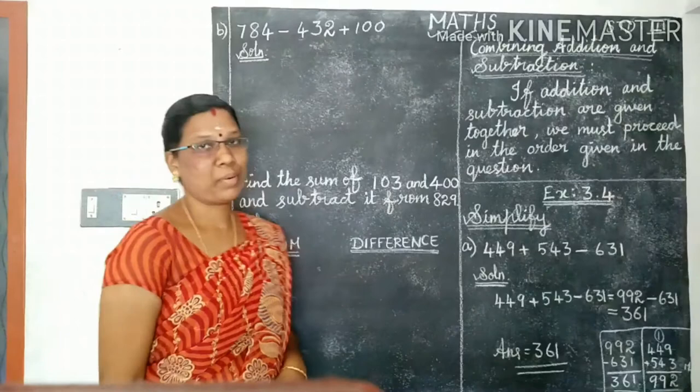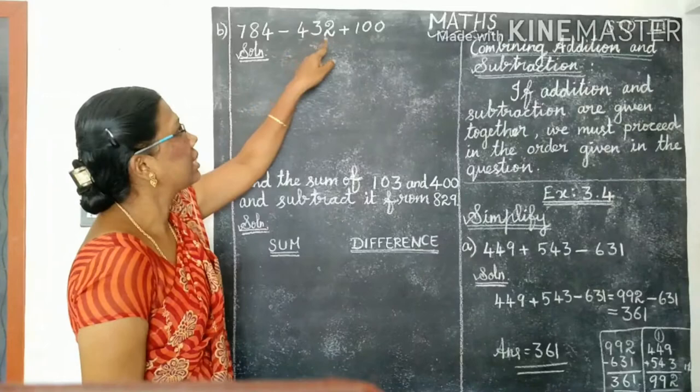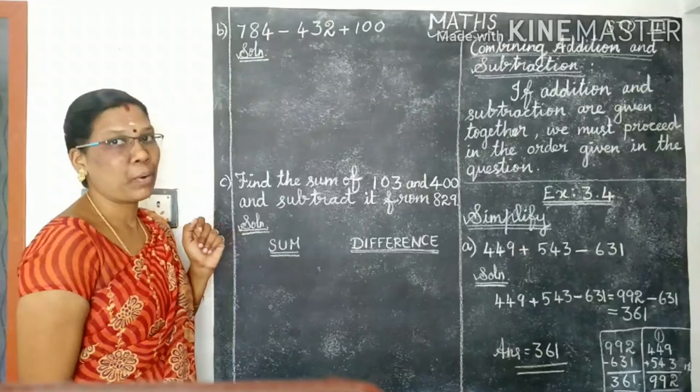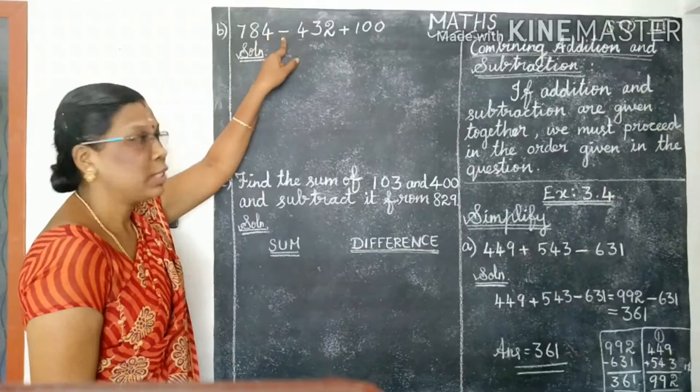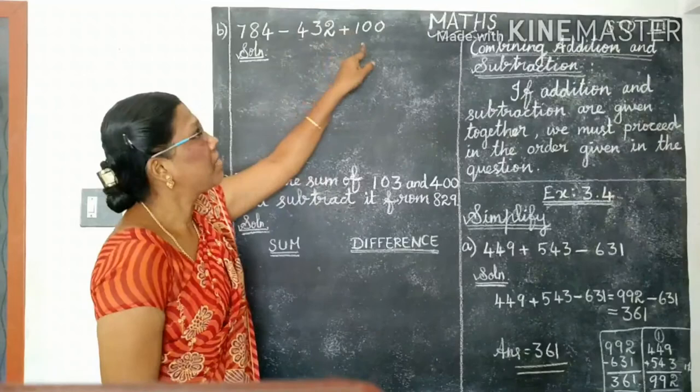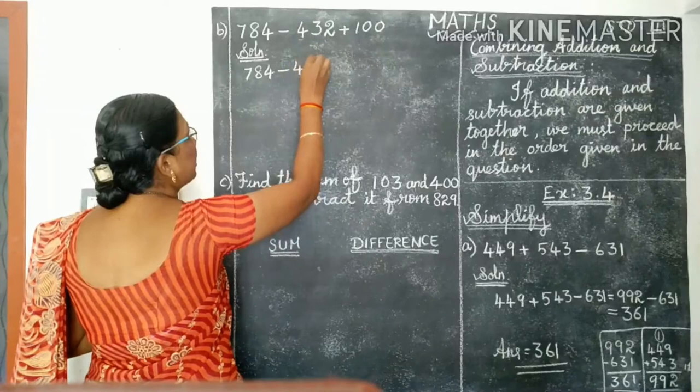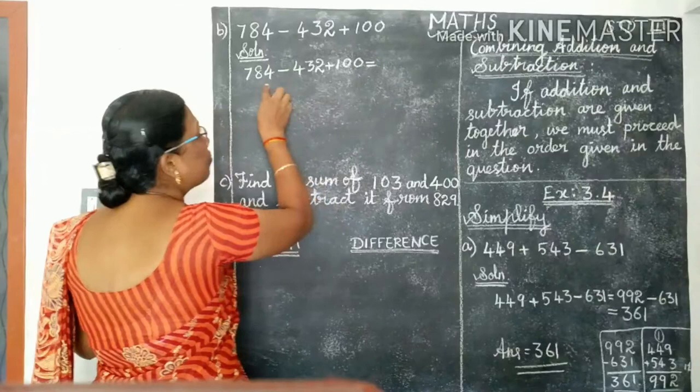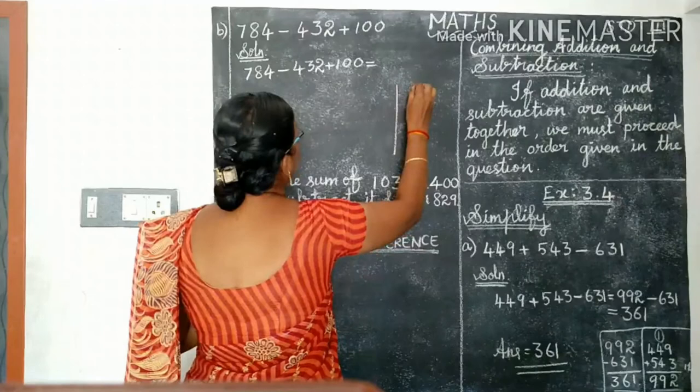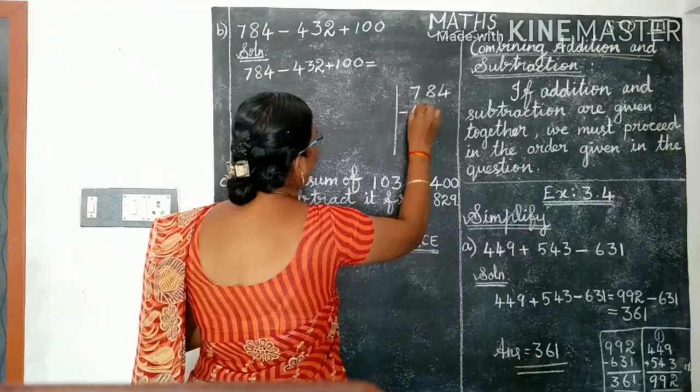Let's listen to the next problem. 784 minus 432 plus 100. Take and write the given problem. Here, what symbol given first? Minus. So we need to subtract first. Then we get one answer. Then add with 100. Then we can get the answer. Now take and write the question: 784 minus 432 plus 100. So first we need to subtract.